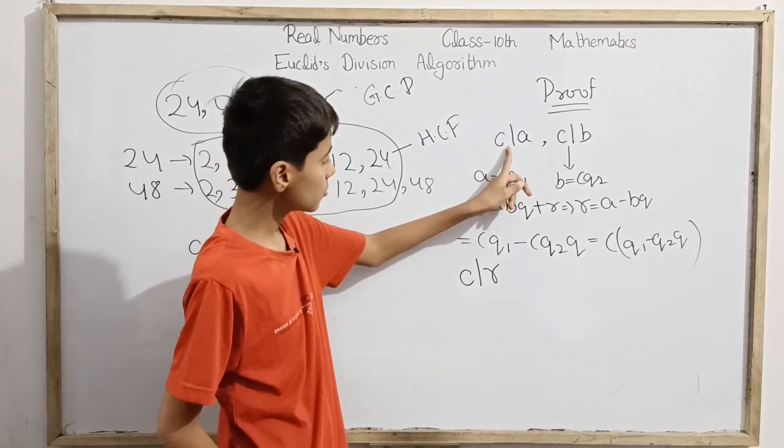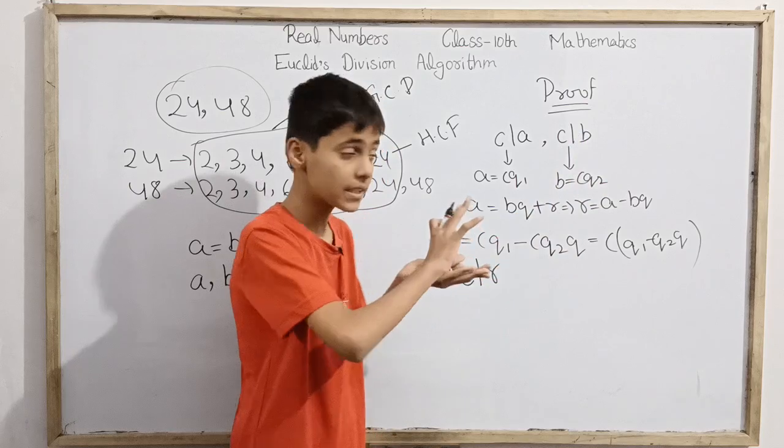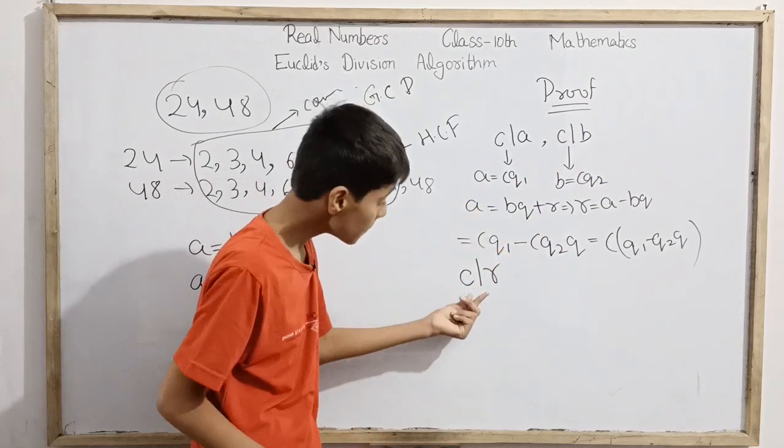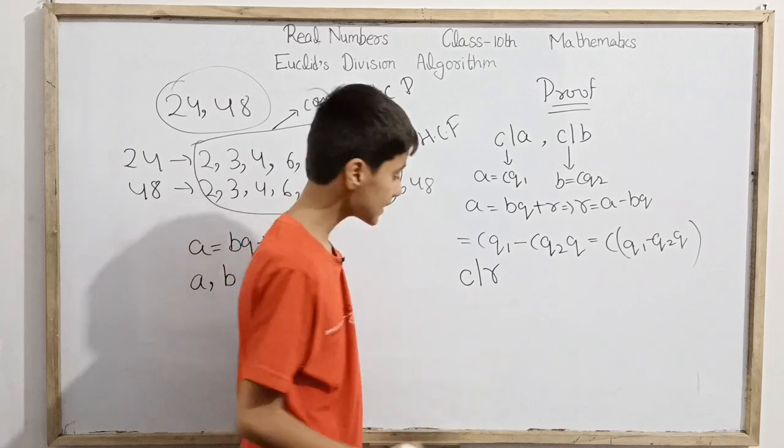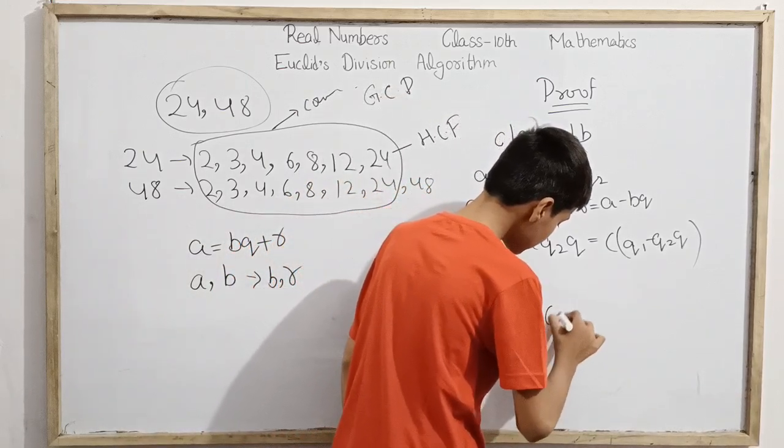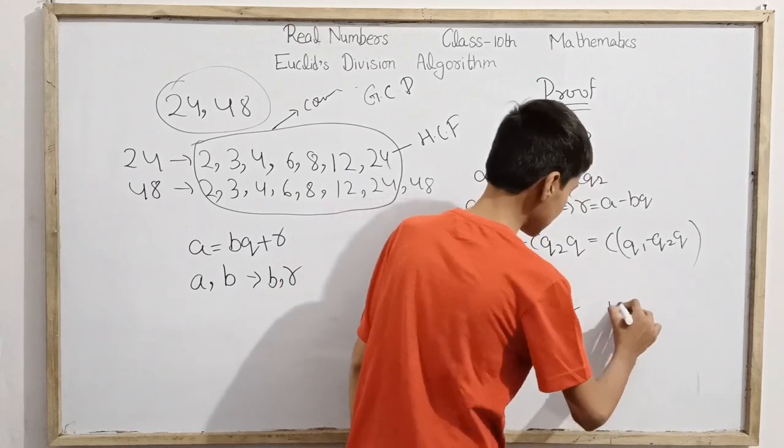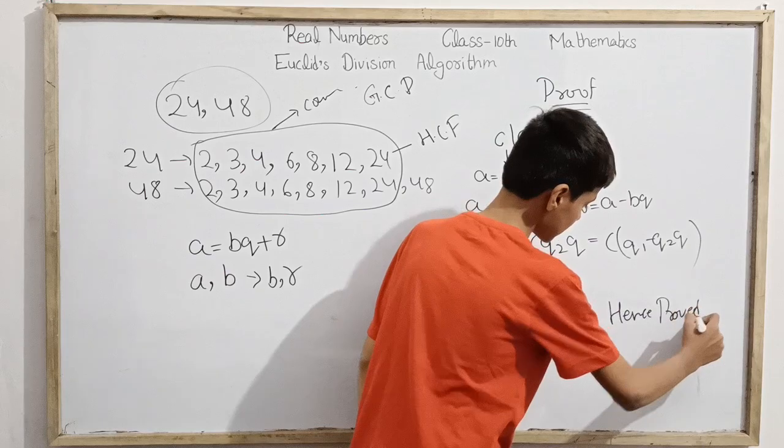As I already assumed c divides a and c divides b, it is a common divisor of a and b. Now we found that c also divides r. This means c is a common divisor of b and r.